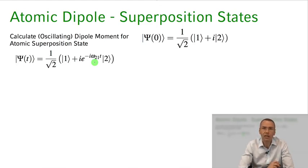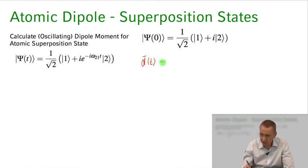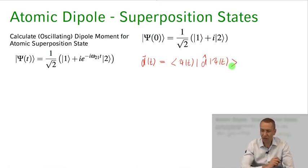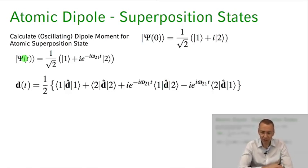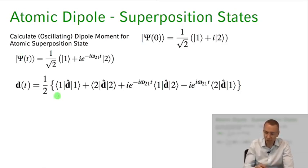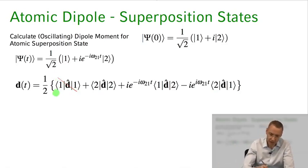Now let's calculate d of t, the expectation value of our dipole operator. d of t is the expectation value over this time-evolved state psi of t. Since we're in a superposition state, we multiply out all the terms, obtaining four terms in this equation. The first two have to vanish — that's what we calculated on the last slide: when you're in an eigenstate, the expectation value of the dipole operator vanishes.